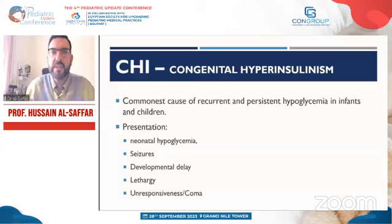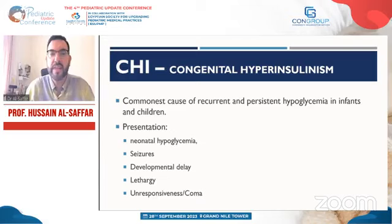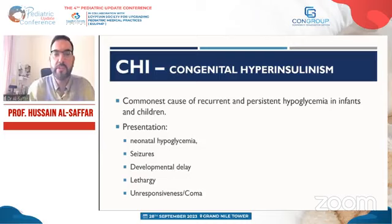Congenital hyperinsulinism is the commonest cause of recurrent and persistent hypoglycemia in infants and children. It can present with different features: neonatal hypoglycemia that becomes persistent or recurrent, first presentation with seizures leading to discovery of hypoglycemia, developmental delay due to unrecognized hypoglycemia, lethargy, tiredness, unresponsiveness, or coma.